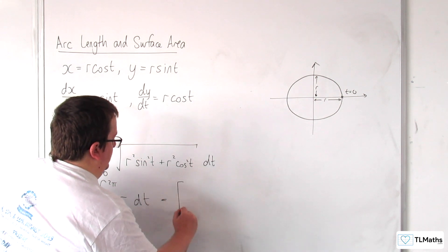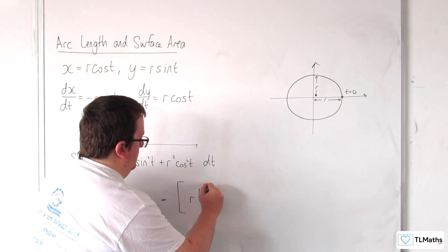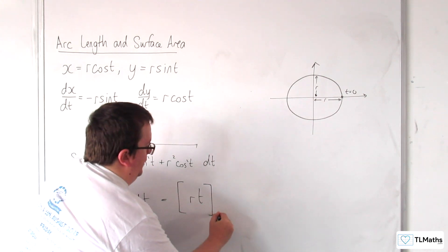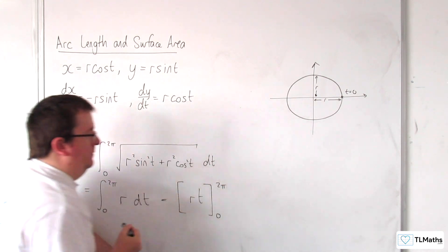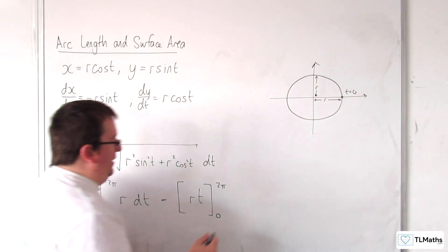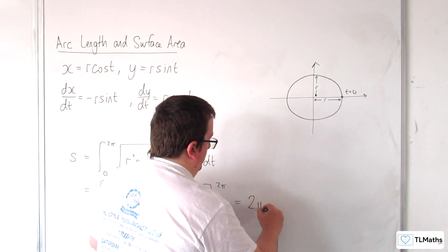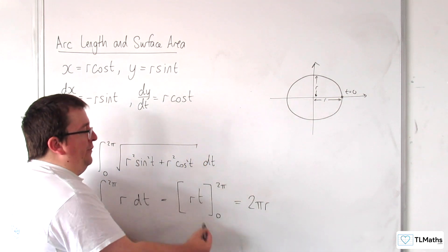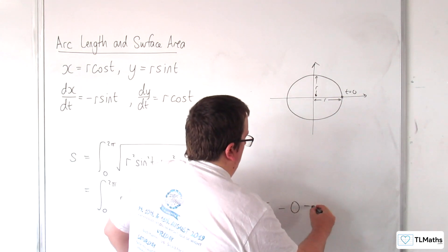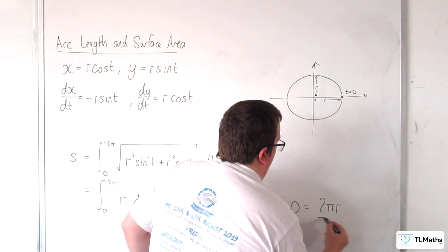So let's integrate r with respect to t. We get rt between 0 and 2π. And then I substitute in the limits. So substituting 2π, we're going to get 2π times r, so 2πr. And then substituting 0, we get 0. And so we get 2πr.